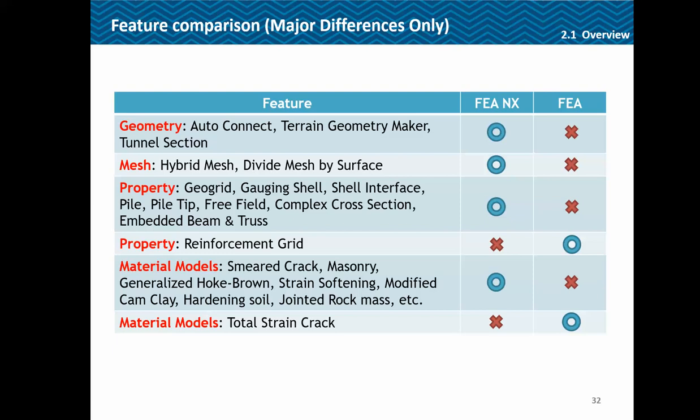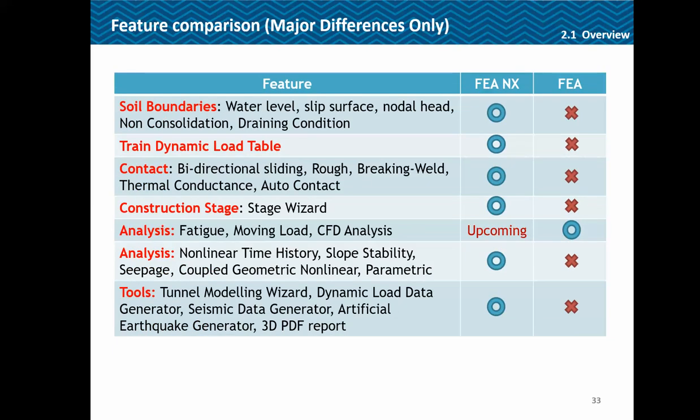The total strain crack material model used in Midas FEA is not available — instead we have the Smeared Crack model. Soil boundary conditions like water level, slip surface, and nodal head have been introduced. A Train Dynamic Load Table has been added. For contact, options like bi-directional sliding, rough, bonding, thermal conductance, and auto-contact have been added. Multiple stage wizards are available for construction stages. Fatigue, moving load, and CFD analysis are still being developed for FEA NX. However, nonlinear time history analysis, slope stability, seepage, proper geometric nonlinear analysis, and parametric analysis are now available in FEA NX, along with tools like tunnel modeling wizard, dynamic load data generator, seismic data generator, artificial earthquake generator, and 3D report maker.